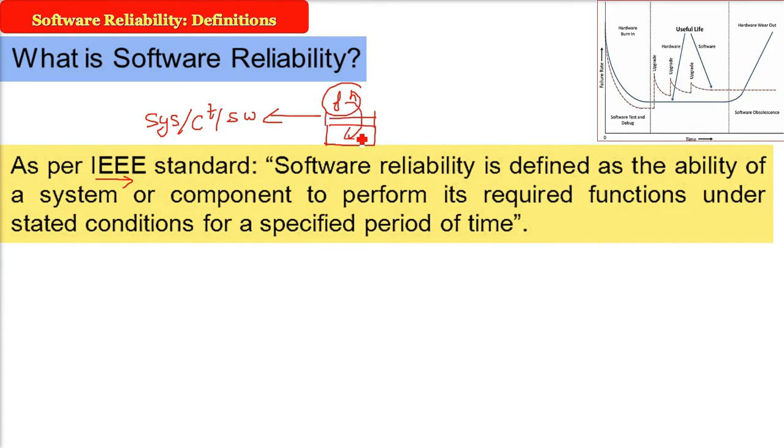That is, if I say this software should work for one year, software reliability means it will work for one year in certain stated conditions. It will provide all the functionality for that stipulated time which we have decided, which we have defined under stated conditions. There can be multiple conditions.